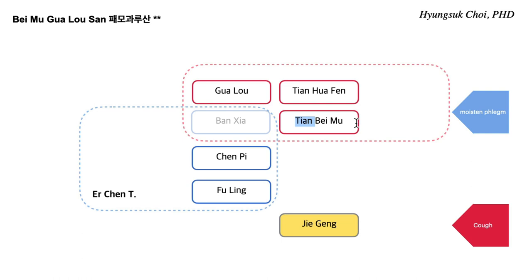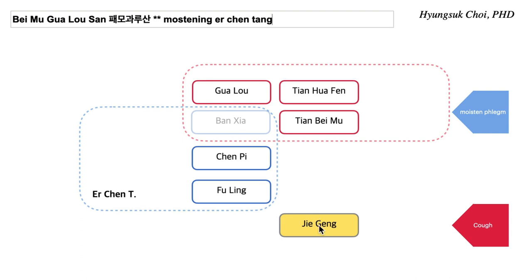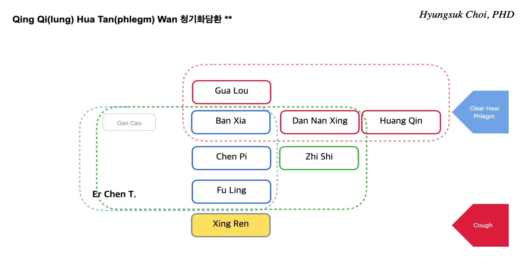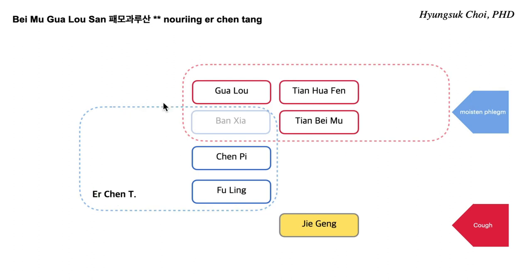So it is easy to remember. I call this formula the moistening Er Chen Tang. Instead of Xing Ren, Ji Ke is used. Xing Ren and Ji Ke are the two representative herbs for subduing phlegm in the Shang Han Lun period. This is nourishing Er Chen Tang — for sticky phlegm. Gua Lou, Tian Hua Fen, and Bei Mu with Ji Ke. This is for hard-to-expectorate phlegm.